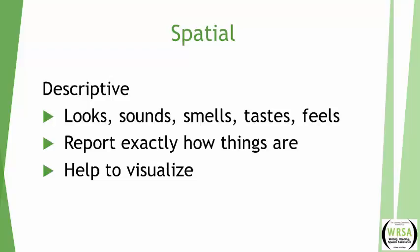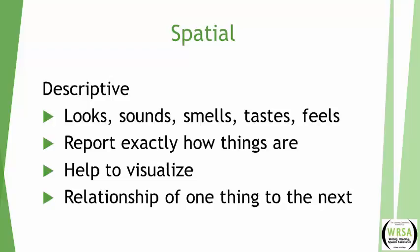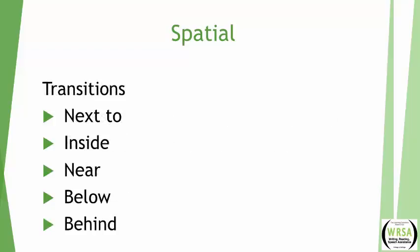We have to be very careful that the person can follow what we're talking about. If I'm describing a room, I want to start in one spot and move all around the room — not jump from the front wall to the back wall to the ceiling and back again, which would be very confusing for someone trying to visualize it. The spatial transition words show the relationship of one thing to the next: next to, inside, near, below, behind.